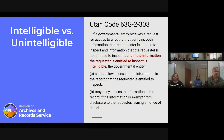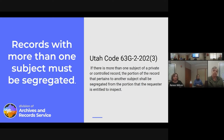Section 308 also says that if the information the requester is entitled to inspect is intelligible — so if after you have redacted or segregated the portion the requester is not entitled to, and what's left isn't intelligible — then you would just deny access to that record as opposed to trying to segregate it.